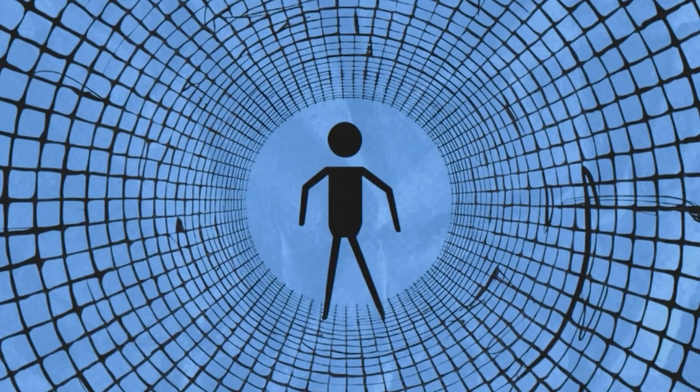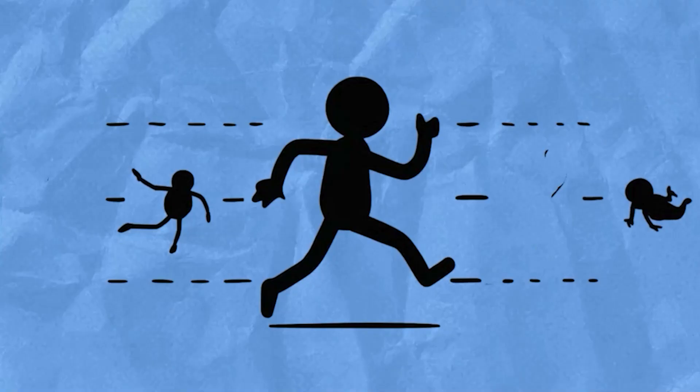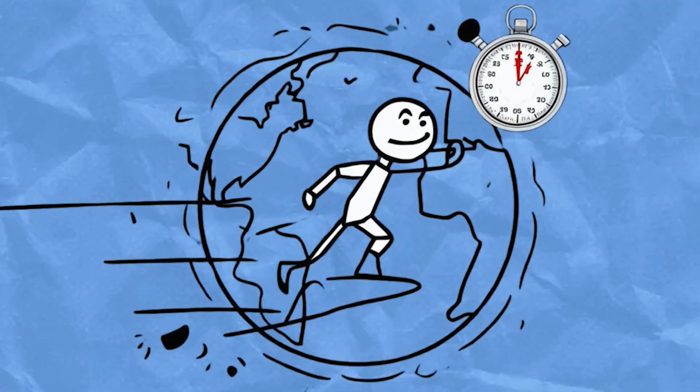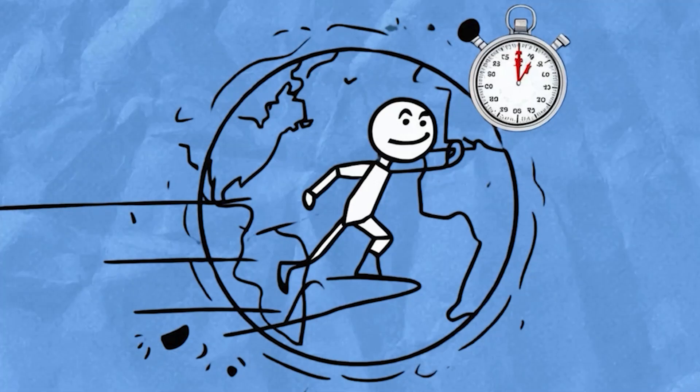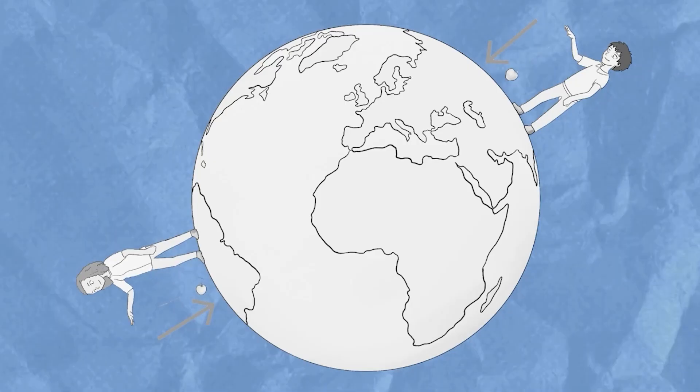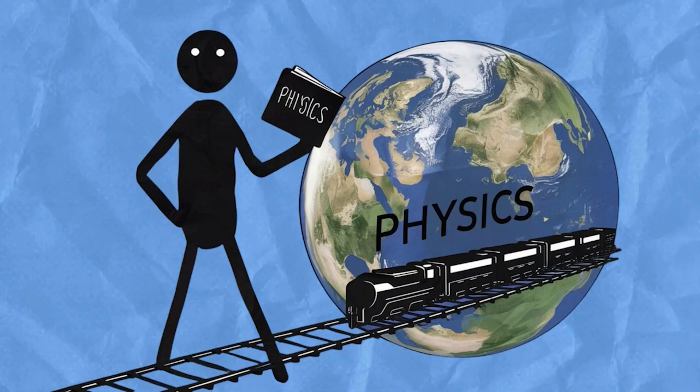But let's say we somehow managed to remove all the air from the tunnel. You'd continue oscillating back and forth indefinitely, as long as there were no other forces acting on you. In this hypothetical scenario, the trip from one side of the Earth to the other would take about 42 minutes, no matter where you started from. This is known as the gravity train concept, a thought experiment in physics.